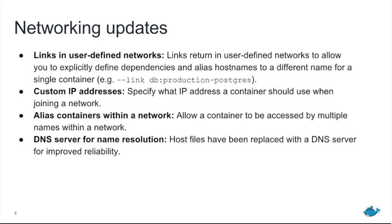Another improvement — which hopefully you won't notice any difference in, apart from things being more reliable — is that in Docker networking 1.9, hostname resolution was done by writing to /etc/hosts in each container. We've now replaced this with a full DNS server system built into Docker Engine, which is essentially much more reliable and scalable. There's also a bunch of other smaller things, which you can view in the Docker 1.10 release notes.